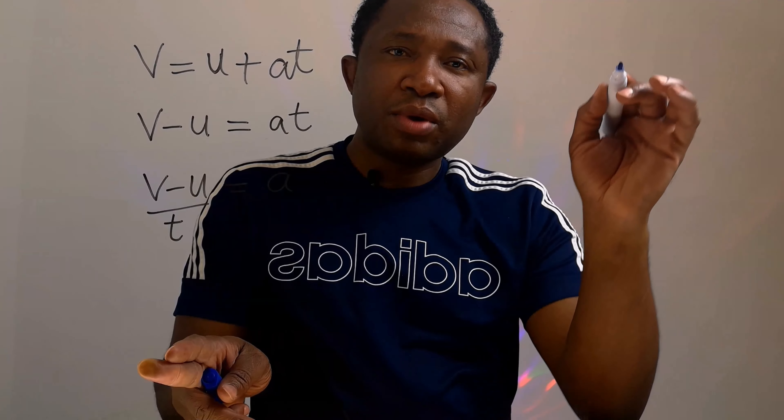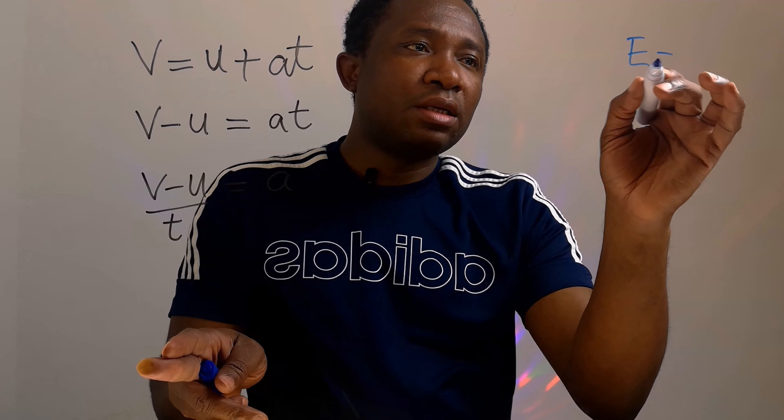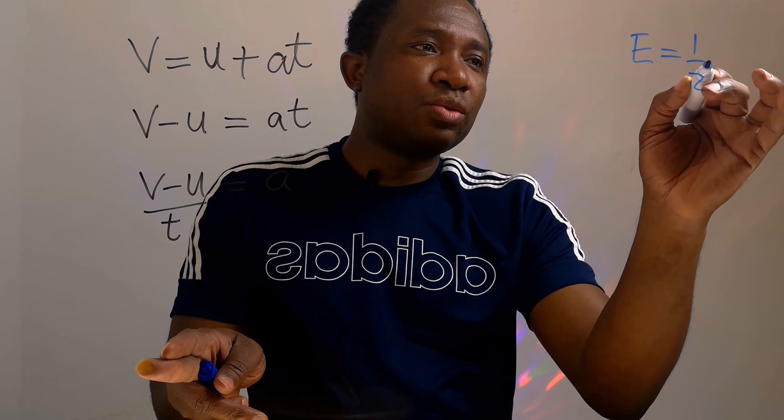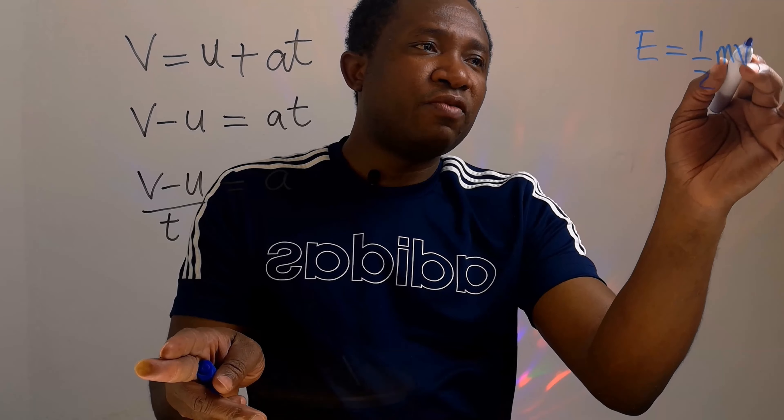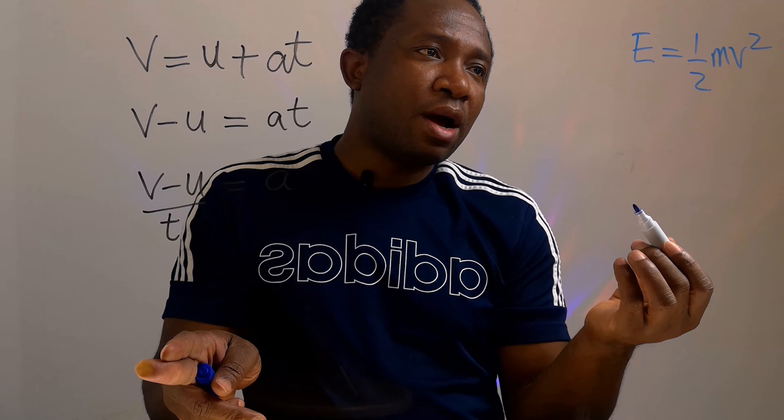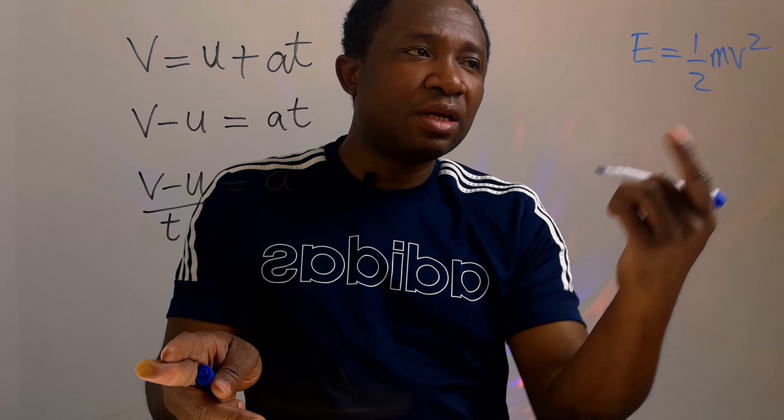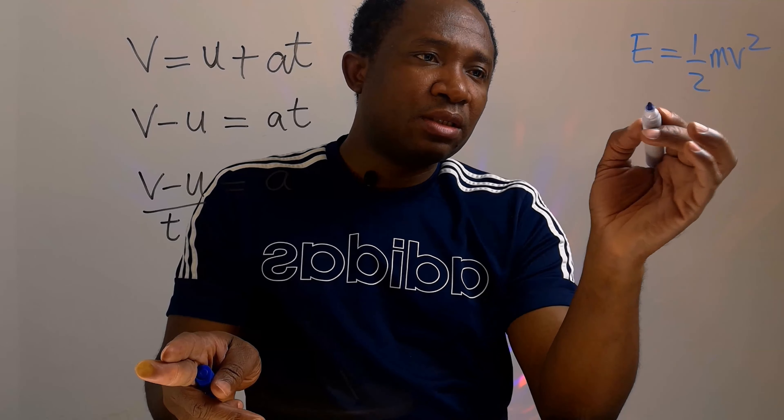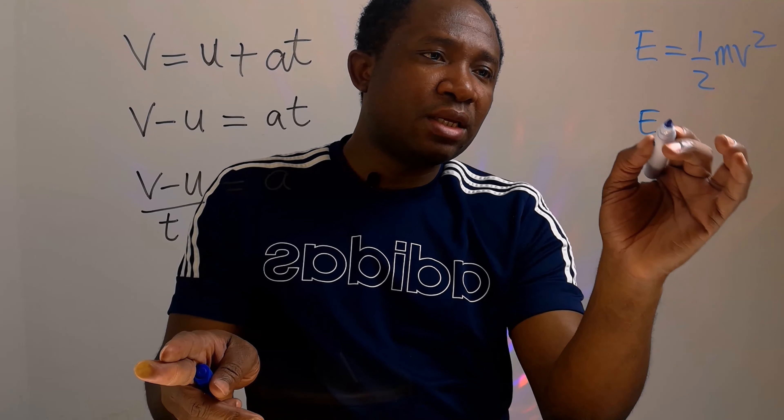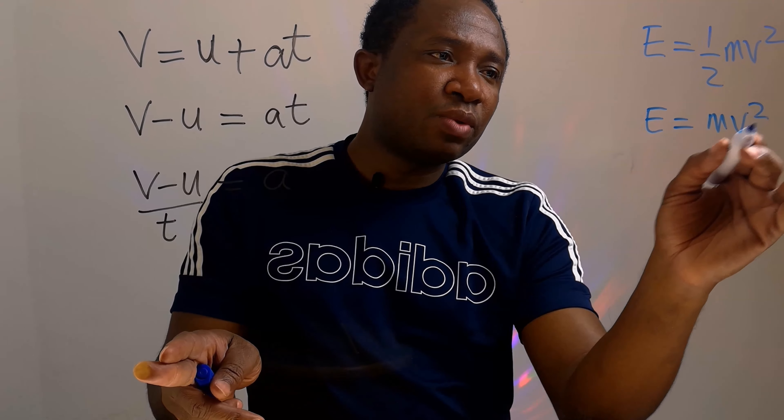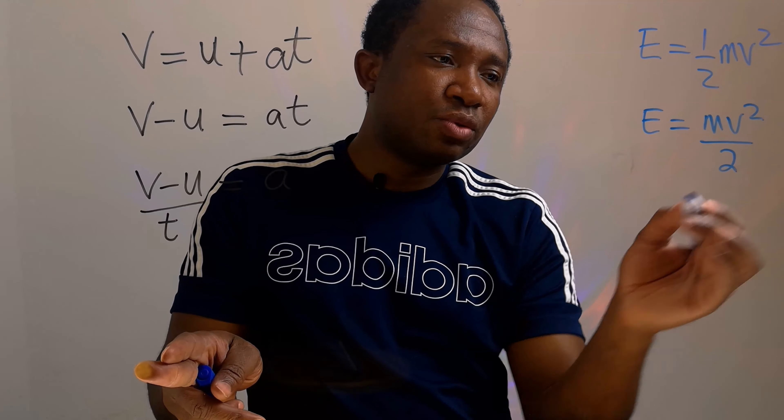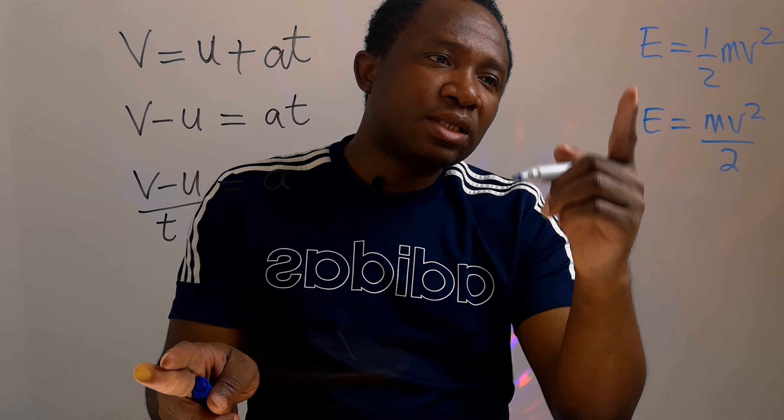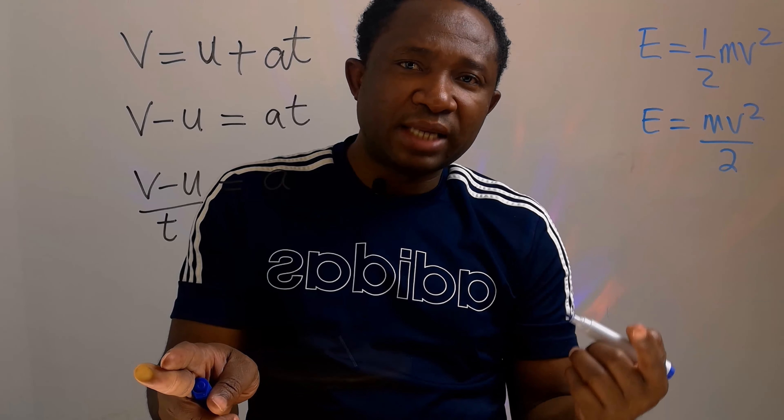Here we're going to have that E equals 1/2 m v squared. Our aim is to make v the subject. This is the same thing as saying E is m v squared over 2. This and this are the same thing.